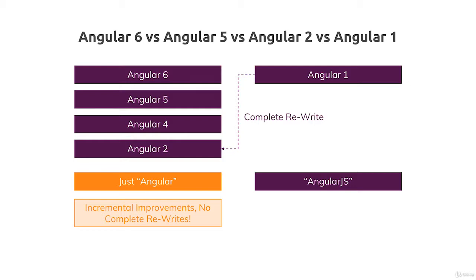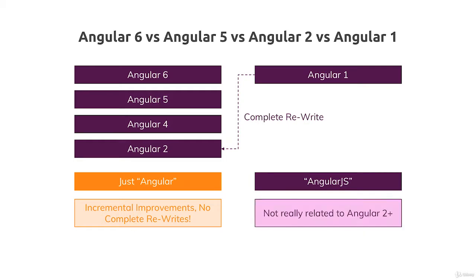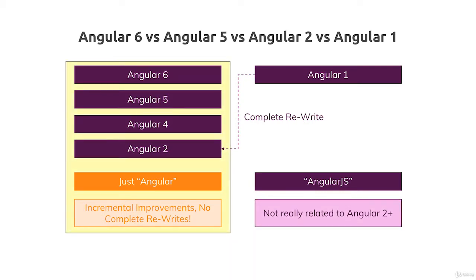So we're not talking about big changes between these version numbers. Angular 6 is the latest version and it's the version covered in this course. Important: Angular 1 is not related to Angular 2 plus. In this course, we'll learn Angular — Angular 2 plus and essentially Angular 6 — since everything you learn here is the latest Angular code version you can learn.